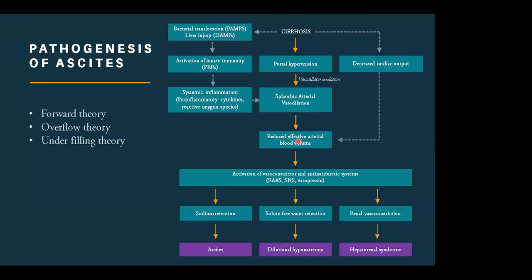Also contributing to reduced effective arterial volumes in most patients with cirrhosis is reduced cardiac output. Sometimes they develop cirrhotic cardiomyopathy, which can also contribute to reducing effective arterial blood volumes. Once we have reduced effective arterial volumes, what we then have is activation of the RAS and the sympathetic nervous systems with subsequent sodium retention and solute-free water retention. This leads to seepage of fluid into the peritoneal cavity, the development of ascites, dilutional hyponatremia, and subsequently in some patients, hepatorenal syndrome. This is the forward theory proposed for the pathogenesis of ascites in patients with cirrhosis.